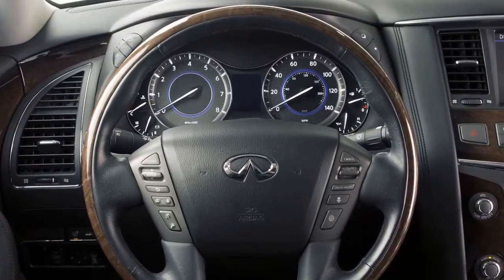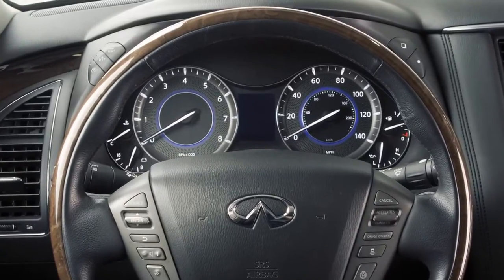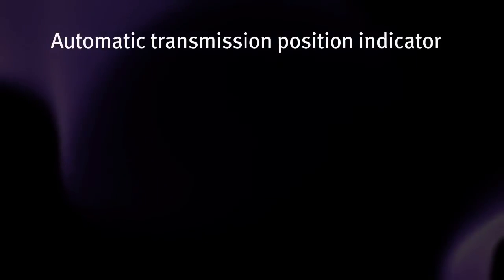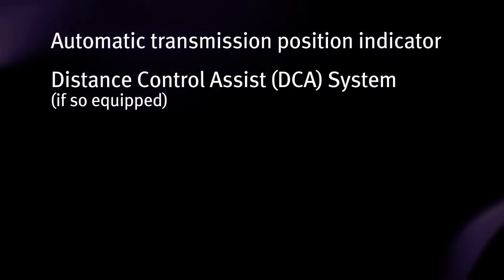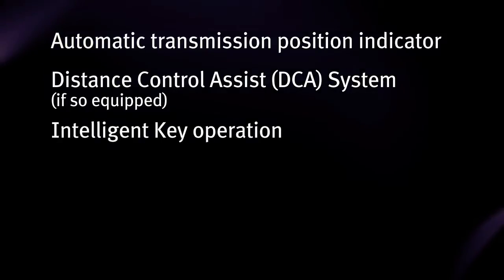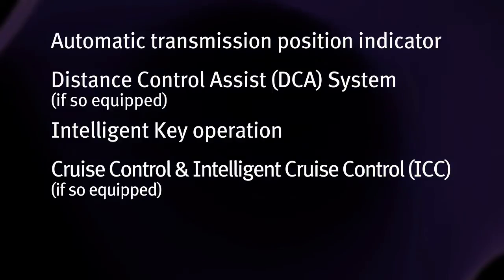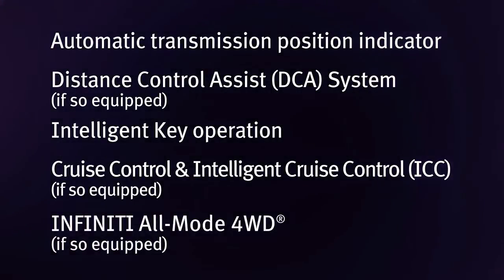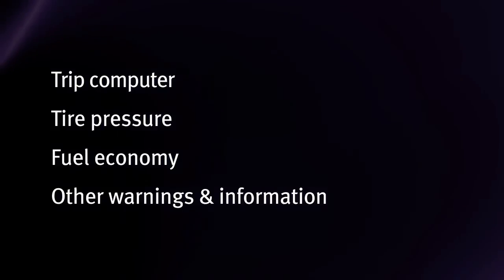Located between the vehicle speedometer and the tachometer is the vehicle information display. It displays operational information such as automatic transmission position indicator, distance control assist or DCA system if so equipped, intelligent key operation, cruise control and intelligent cruise control or ICC if so equipped, Infinity all-mode four-wheel drive if so equipped, trip computer, tire pressure, fuel economy, and other warnings and information.